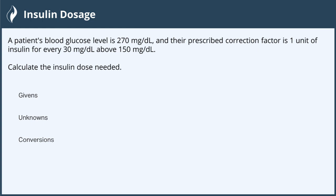We need to start by identifying our givens. In this problem, we're told that the patient's blood glucose level is 270 milligrams per deciliter, and we can write that in to our given.